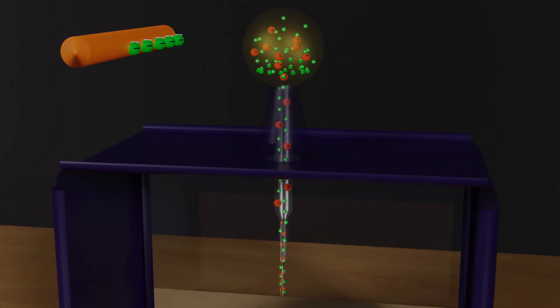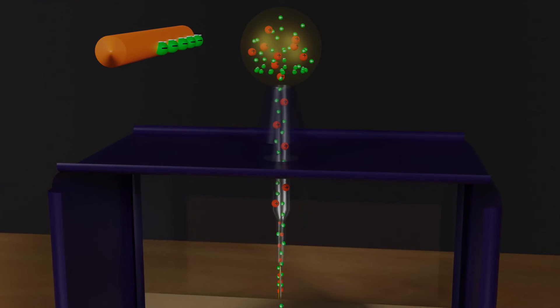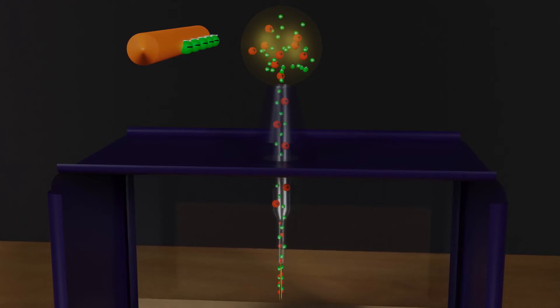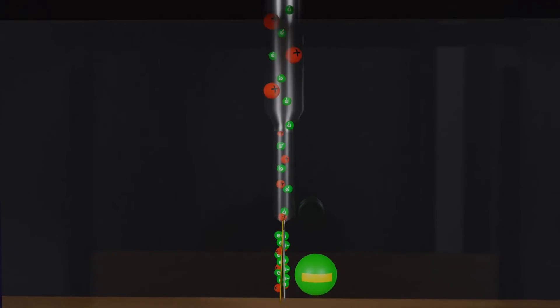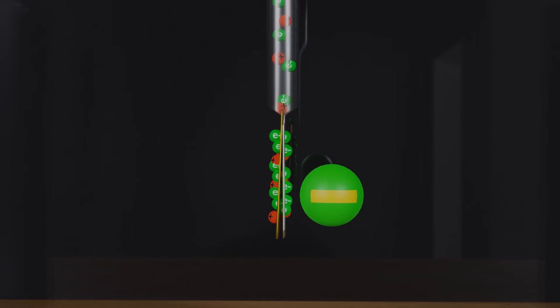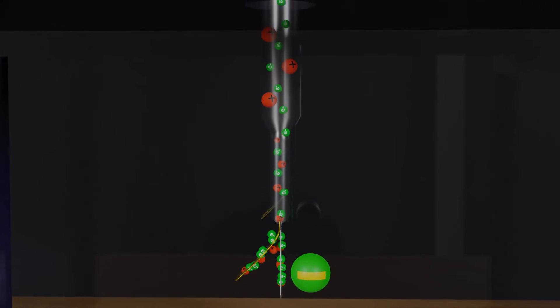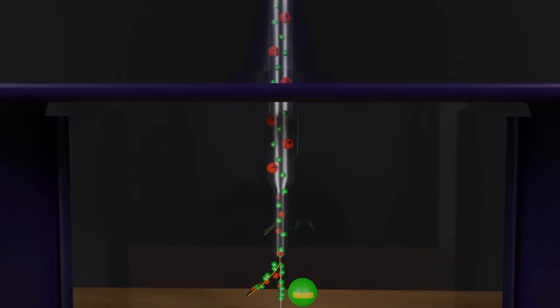In this case, the negatively charged plastic rod repels electrons, causing them to move towards the gold leaf. Once again, due to the same charge, we see a similar deflection on the gold leaf, as observed previously.